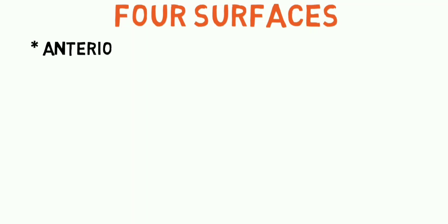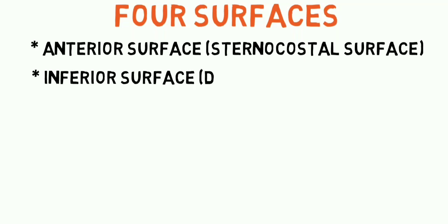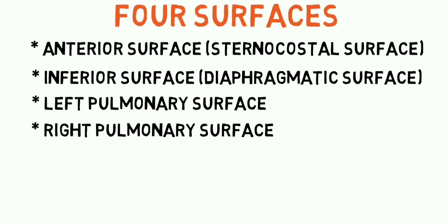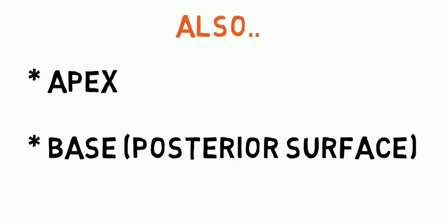The heart has got four surfaces: the anterior sternocostal surface, the inferior diaphragmatic surface, the left pulmonary surface and right pulmonary surface. It also has got an apex and a base, also known as the posterior surface. The apex is formed by the tip of the left ventricle.